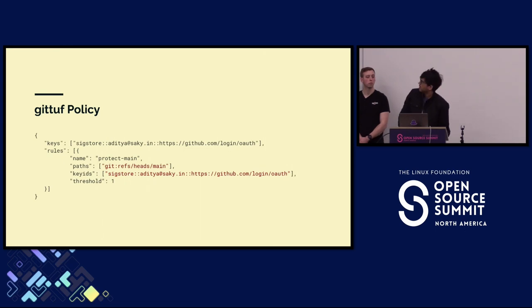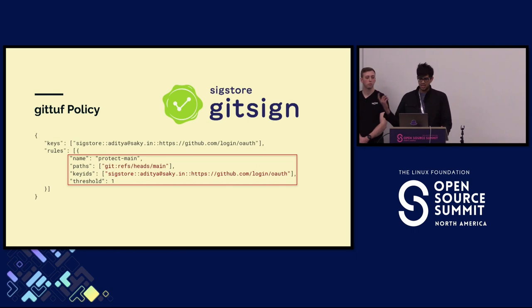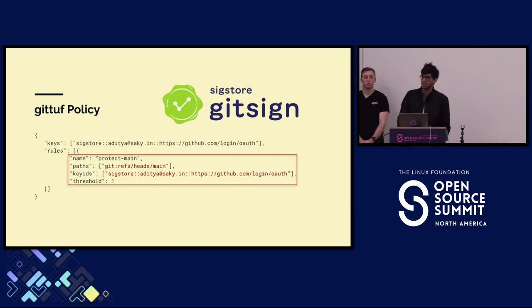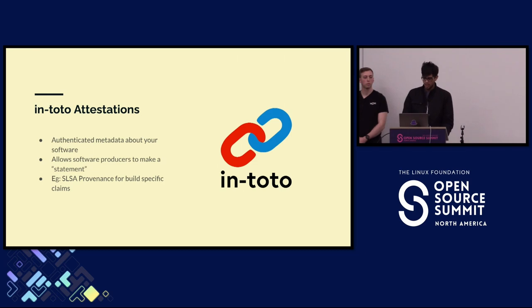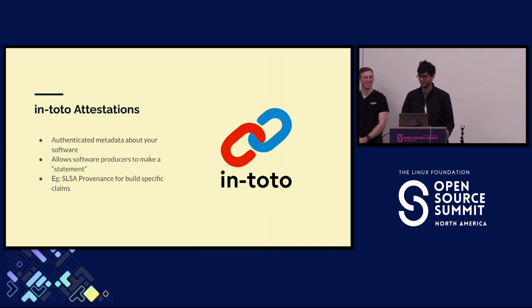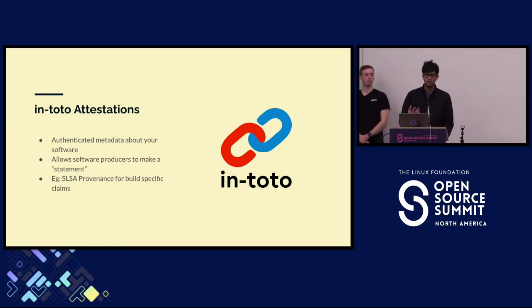This is a condensed version of GitTuff policy enabled on one of our demo repositories. If any of you have worked with TUF in the past, a lot of things are going to look somewhat familiar. This has basically one rule that says: this rule protects the main branch of the repository and every push to the main branch needs to come from me — that's my git-signed identity authenticated via GitHub. Another component we've plugged into GitTuff is support for in-toto attestations. We make use of them in a couple of different ways.